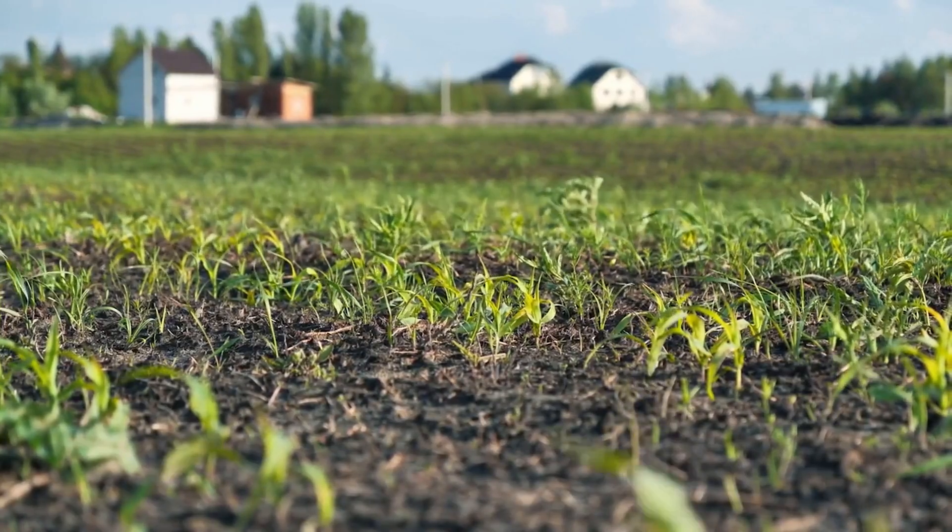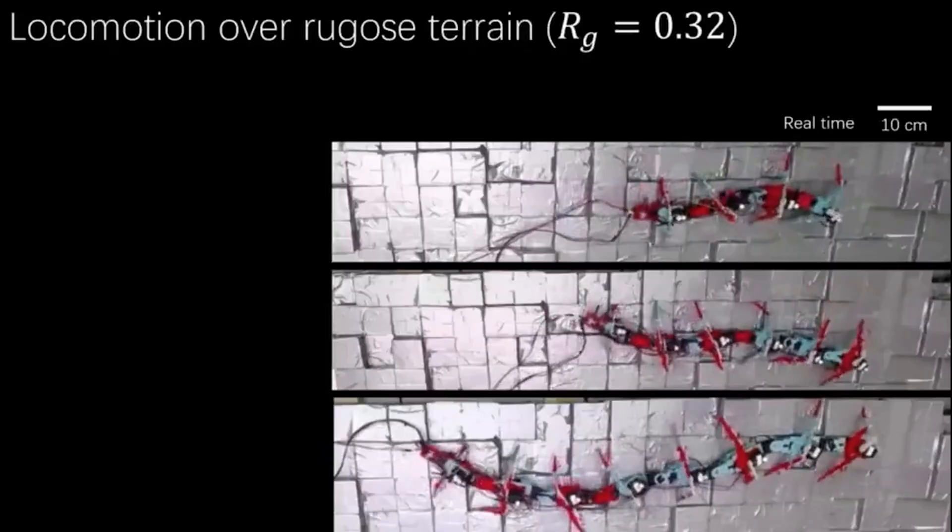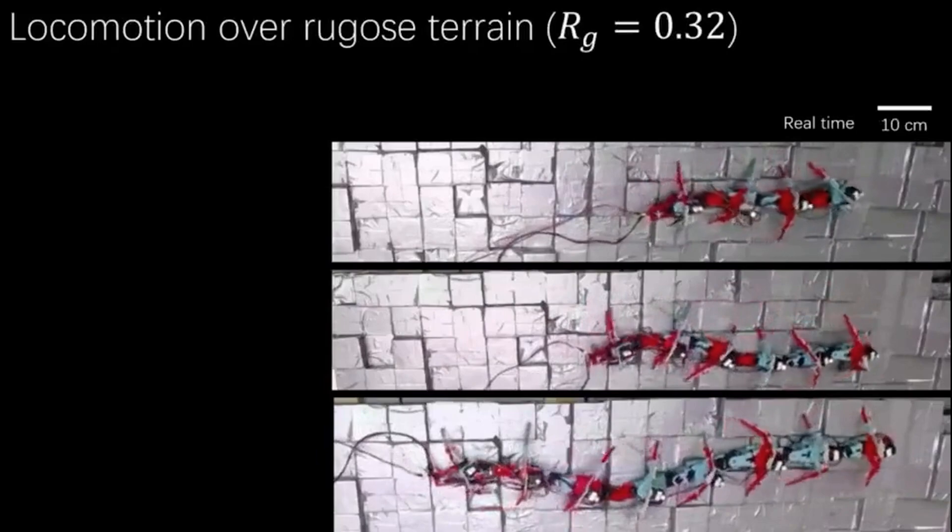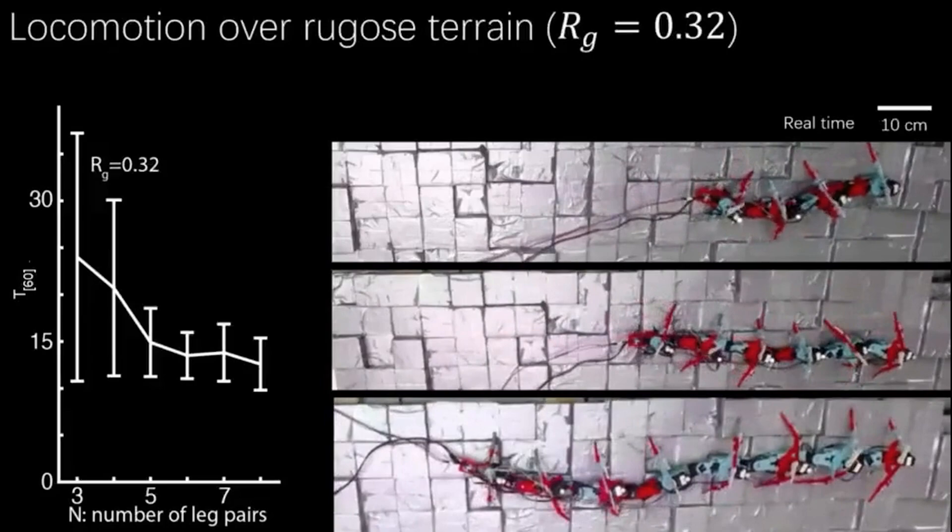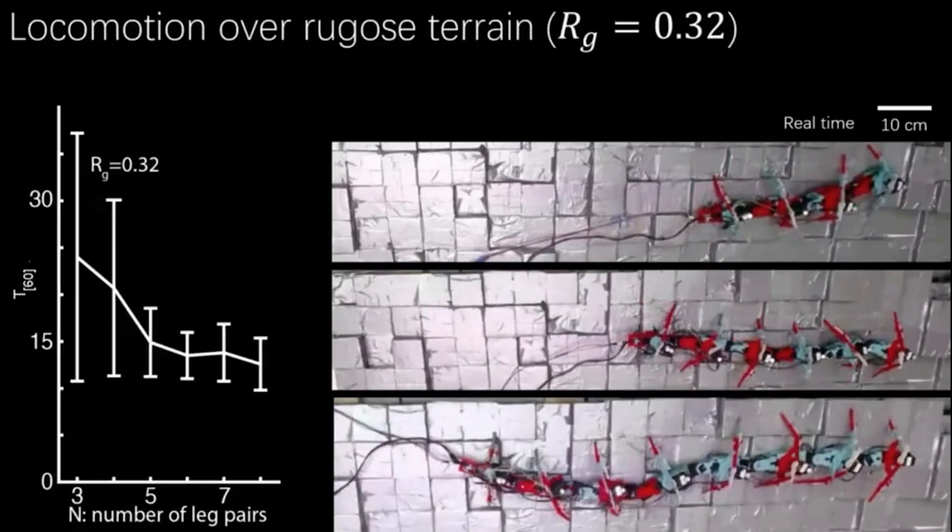The researchers also want to refine the robot. They know why the centipede robot framework is functional, but now they're determining the optimal number of legs to achieve motion without sensing in a way that is cost effective.